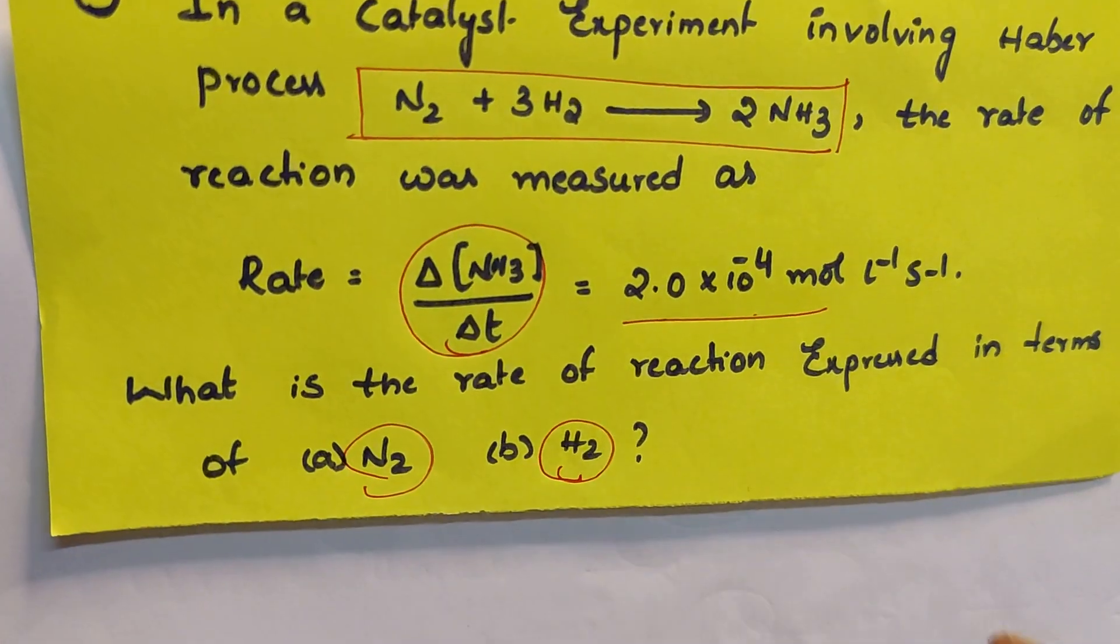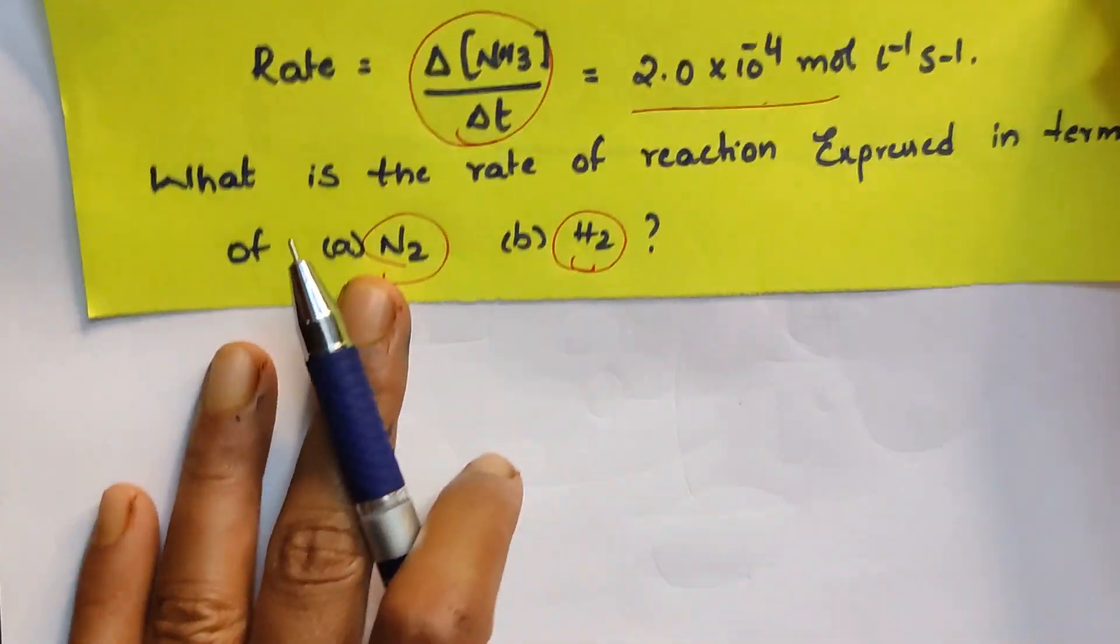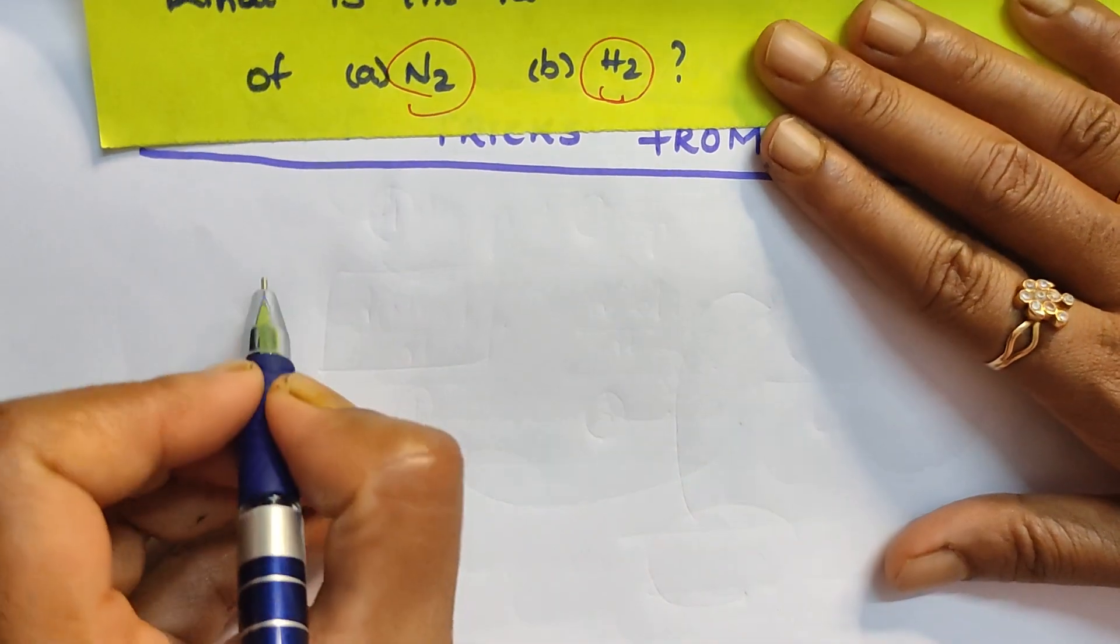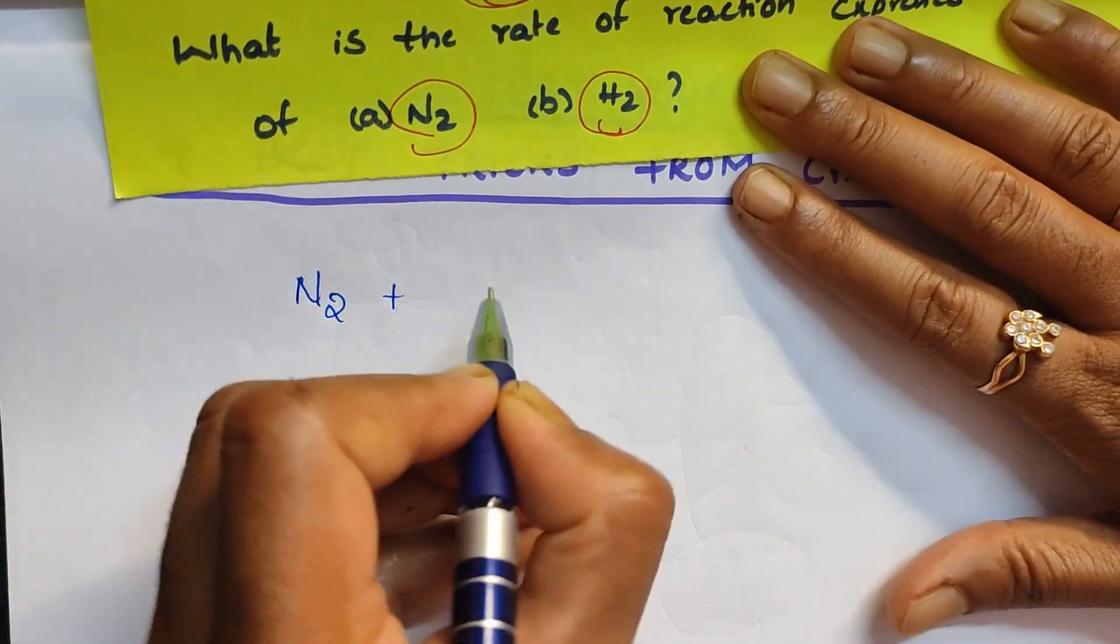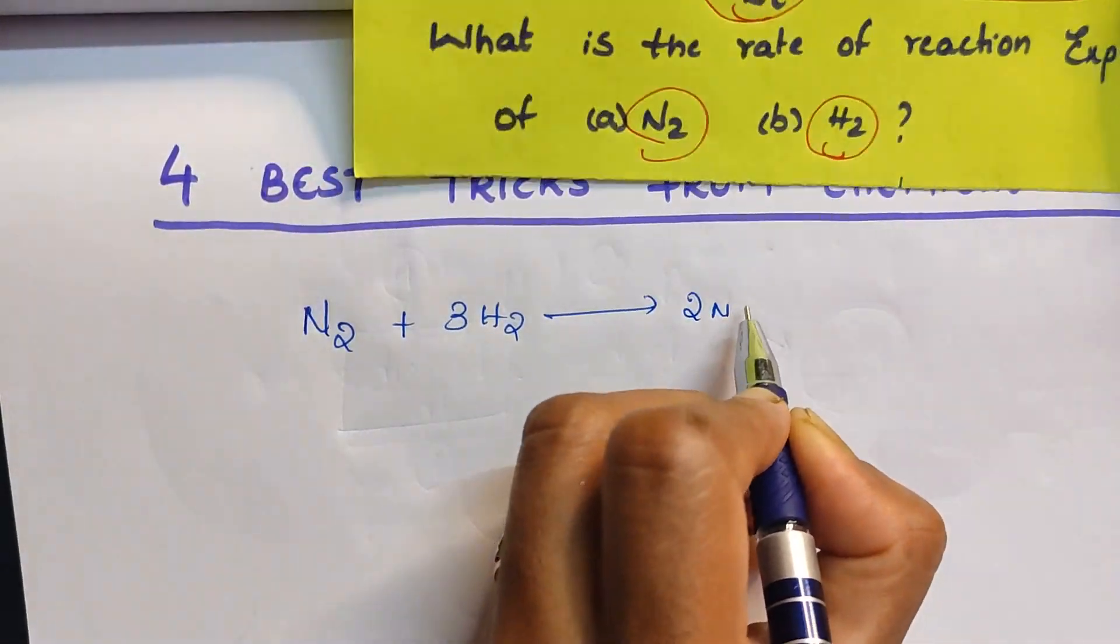And the rate of reaction expressed in terms of N2 and H2, they are asking. This is one of the repeated model of a question. See how to solve this: first you need to take out the reaction which is asked over here and then write the rate expression.